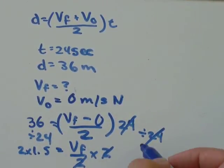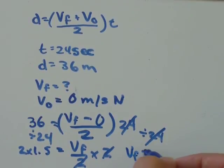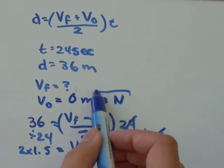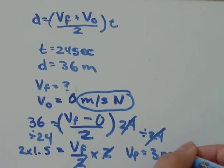And 2 times 1.5 is just 3. So VF is going to equal 3 meters per second north. And that's it.